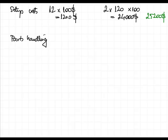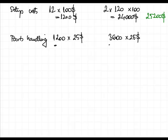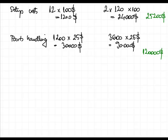Parts handling will depend on the number of parts: one for each unit of product A and three for each unit of product B. That means 1,200 parts for product A multiplied by $25, and 3,600 parts for product B — amounting to $30,000 for product A and $90,000 for product B, a total of $120,000.